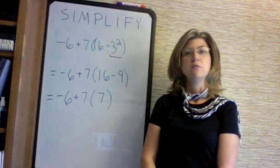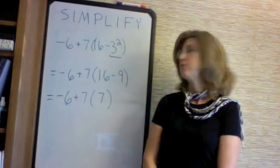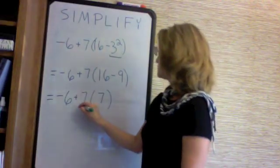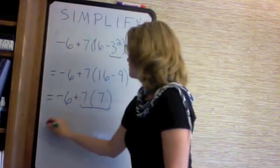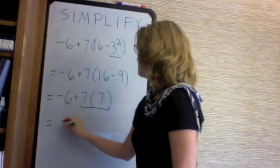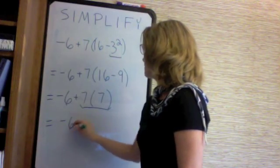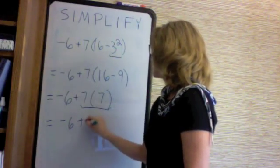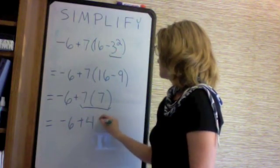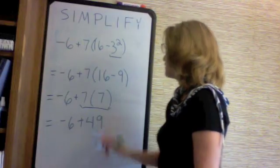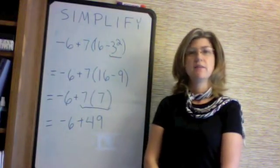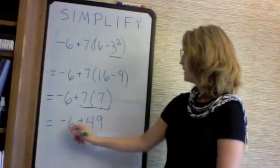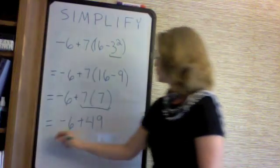We will do the multiplication first. This gives us minus 6 plus 49, since 7 times 7 is 49.